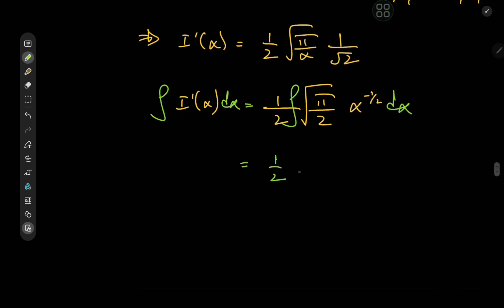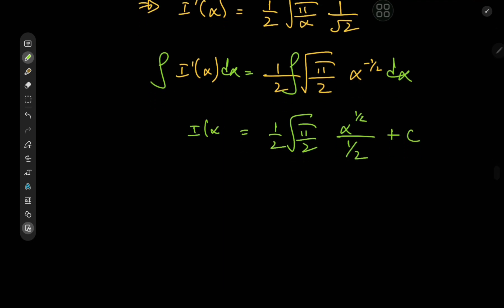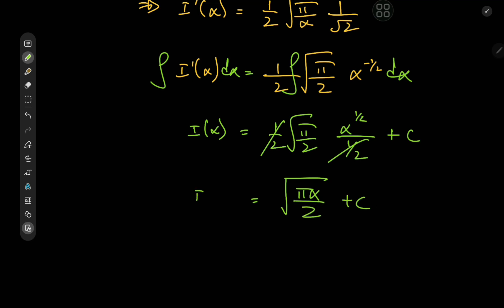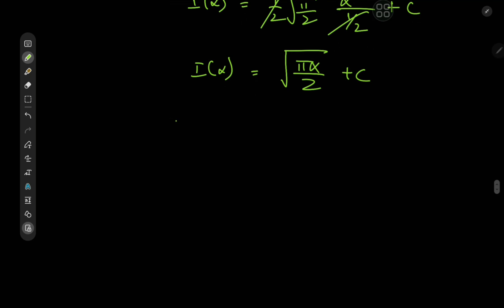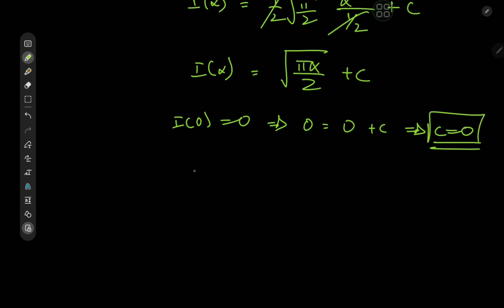So that means we have one half of root π over two times the integral of α to the negative one half, which is α to the one half divided by one half by the power rule, giving us a factor of two that cancels out, plus a constant of integration c. So I(α) equals root π over two times root α, which is root π α over two plus c. Using our initial value I(0) = 0, we get zero equals zero plus c, so c equals zero. Therefore I(α) equals root π α over two.